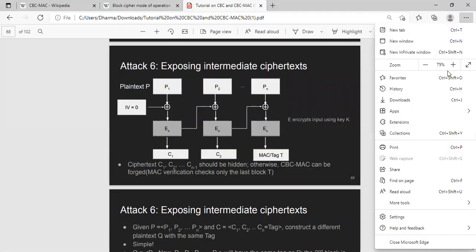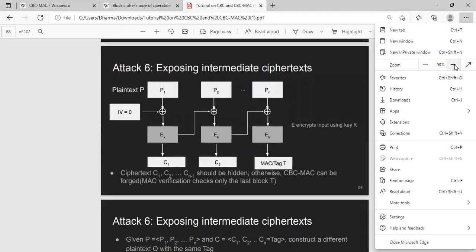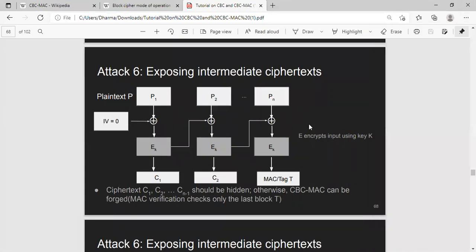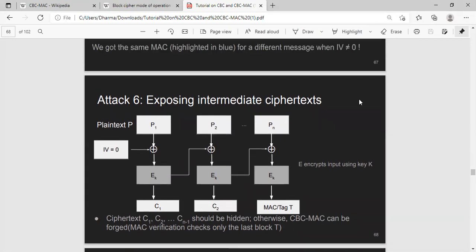In this case I'm using the proper IV, meaning IV is set to zero. That is what we need for CBC-MAC. And I will show you one attack where exposing the intermediate ciphertext will get into a problem. More specifically, as you can see here, I'm not supposed to expose C1, C2.